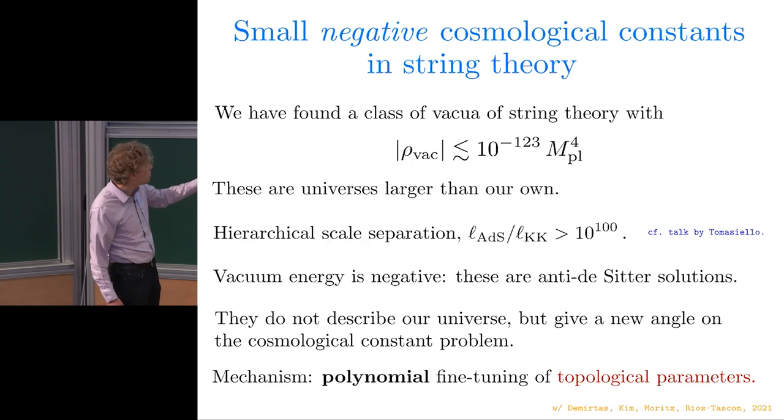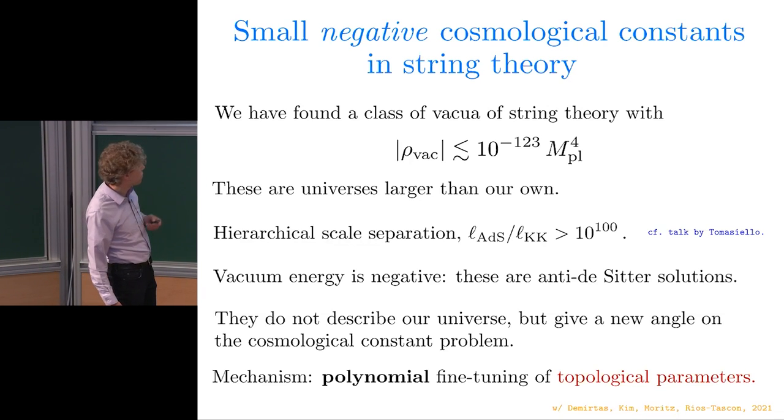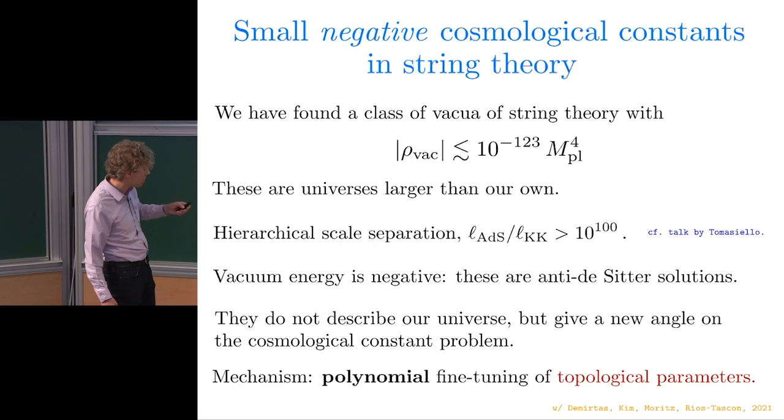The vacuum energy is negative. These are anti-de Sitter solutions. They don't describe our universe, but they do give a new angle or maybe a hope of a new angle on the cosmological constant problem. The mechanism is polynomial fine-tuning of topological parameters. The purpose of this talk is to explain the construction and how one achieves polynomial fine-tuning of topological parameters to get exponentially small vacuum energy. This is work with Demirtas, Kim, Moritz, and Rios-Tascon in 2021.